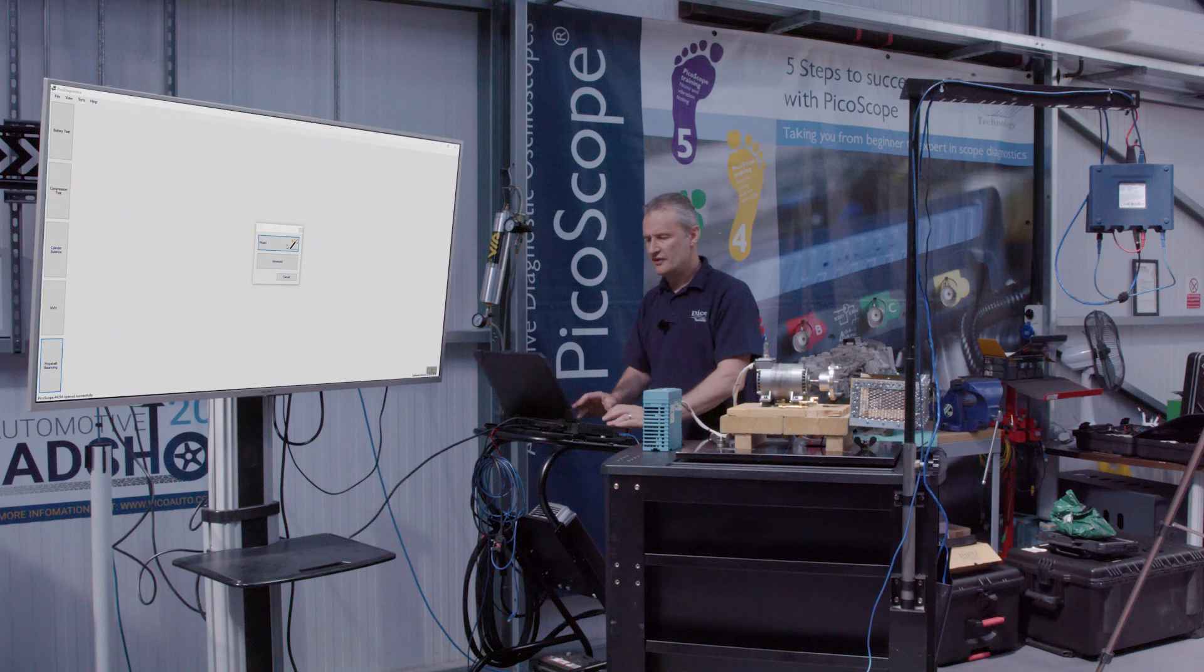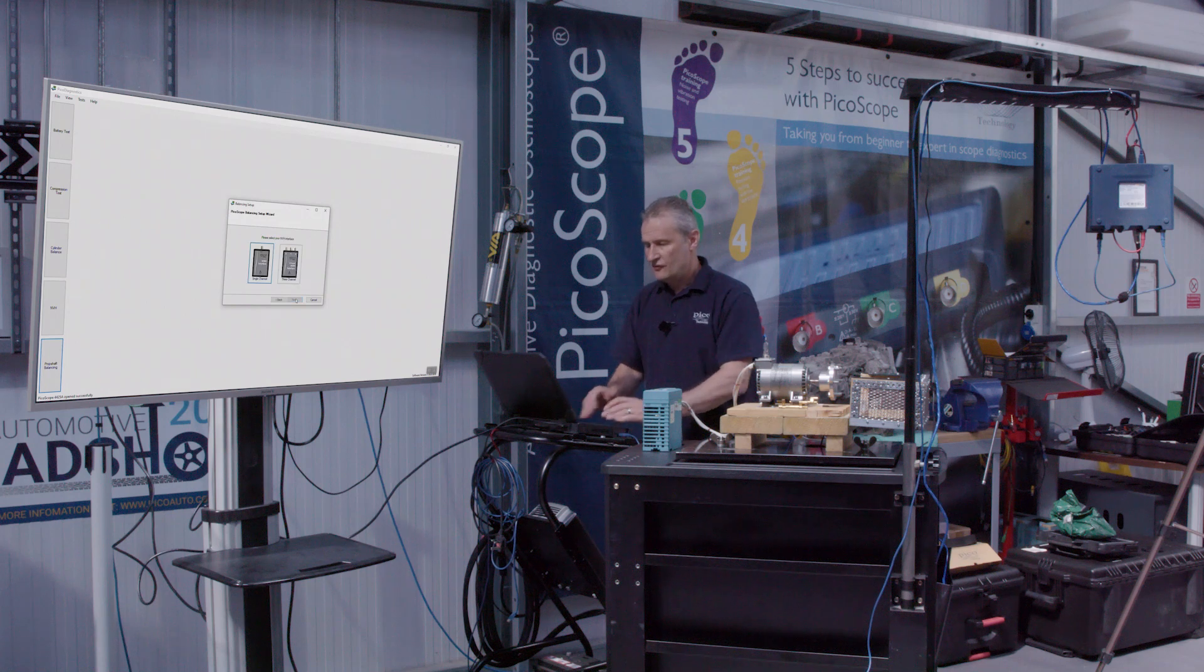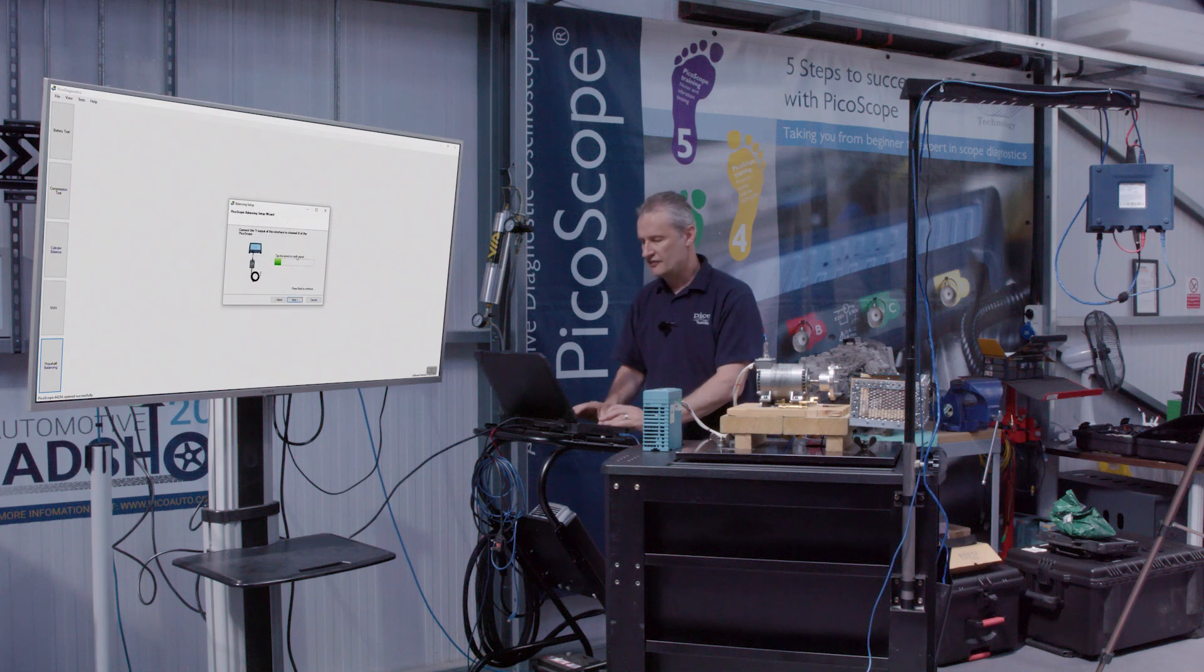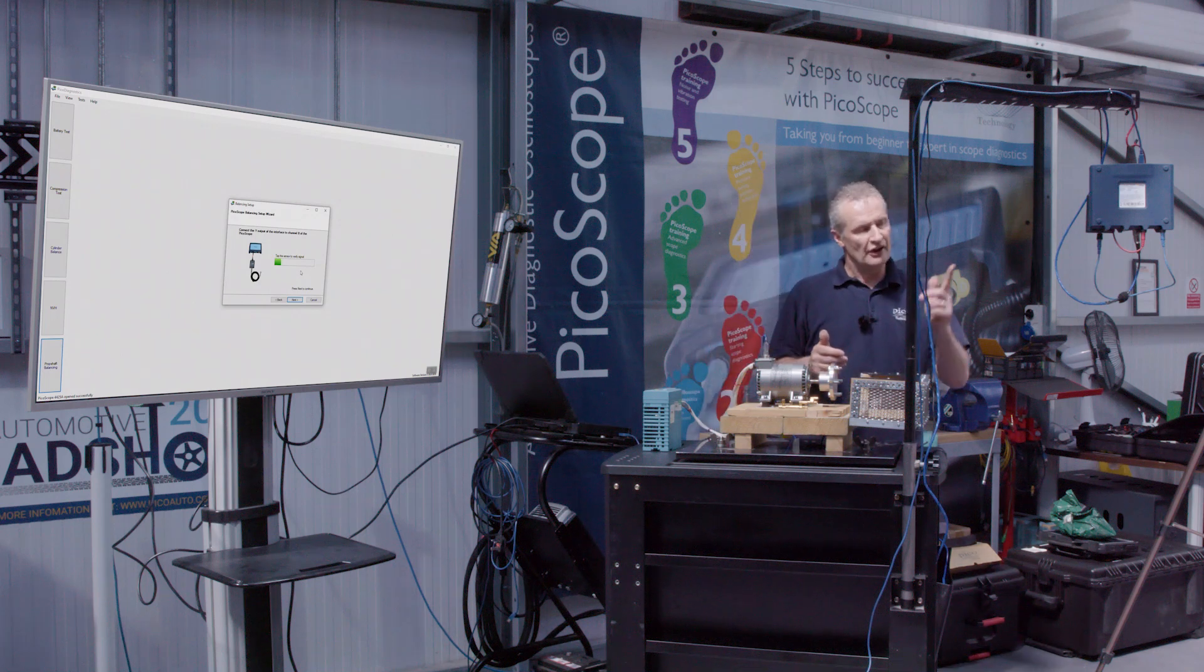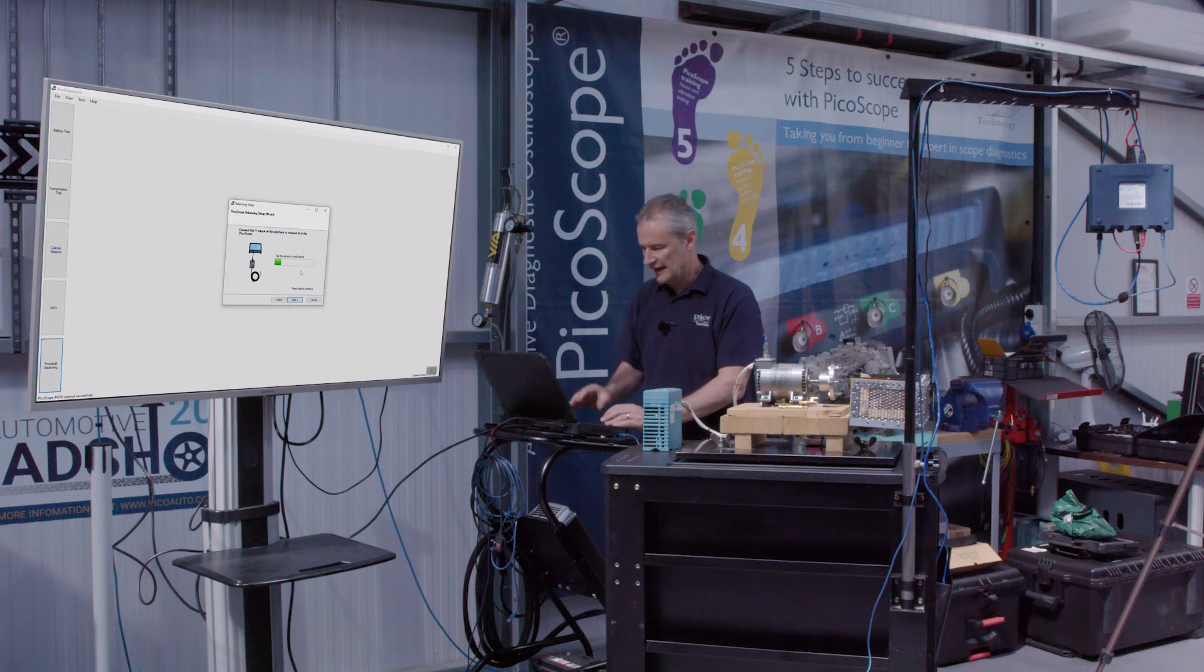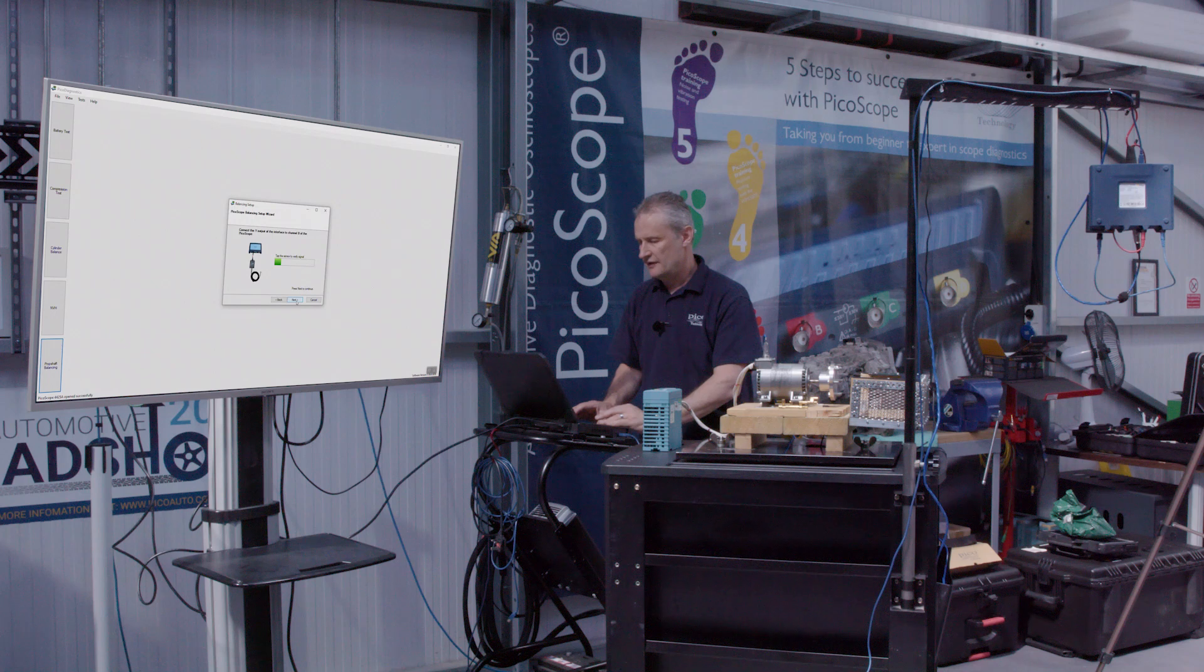We'll use the wizard method so this is all pre-configured. PicoScope is connected, we can see there, and first question is which interface are we going to use? Well it'll be the three channel interface but we are only using the vertical axis. So you'll see here we've got an accelerometer connected and our connection via the interface box is channel Y for the vertical axis. You can see there that it's also live, so as I tap the accelerometer I'm getting a response immediately on the bar graph.